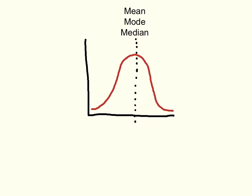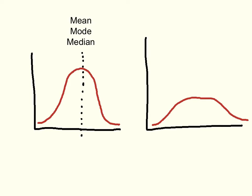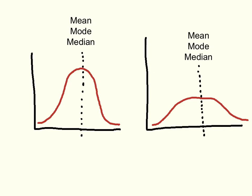There's another characteristic of a distribution and of a set of data that's very important as well, and that is the variation or dispersion of the data. For example, this other distribution may have exactly the same mean, mode, and median, but it looks very different in shape — the observations are dispersed across a wider range of values. This distribution looks more squished, and that's because the variability is higher in it than in the other.